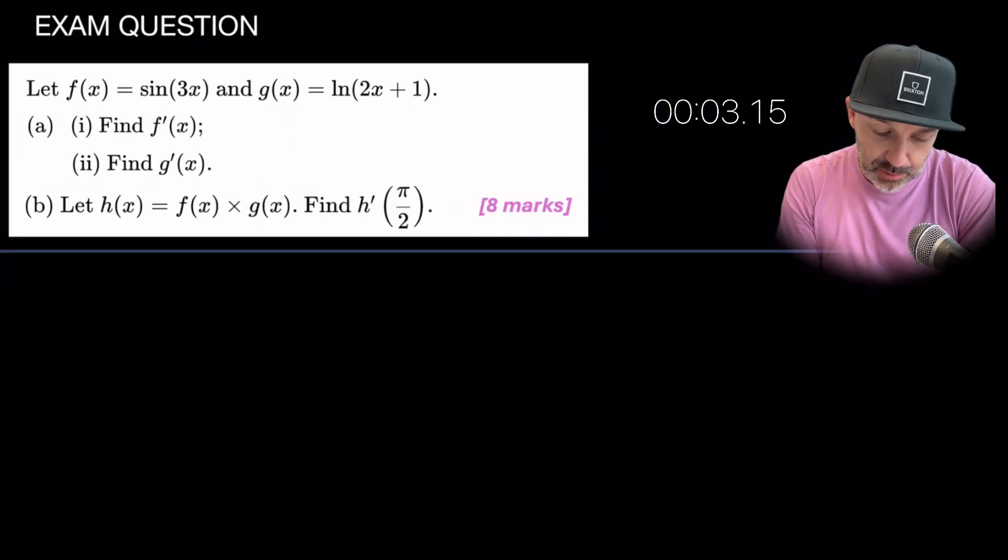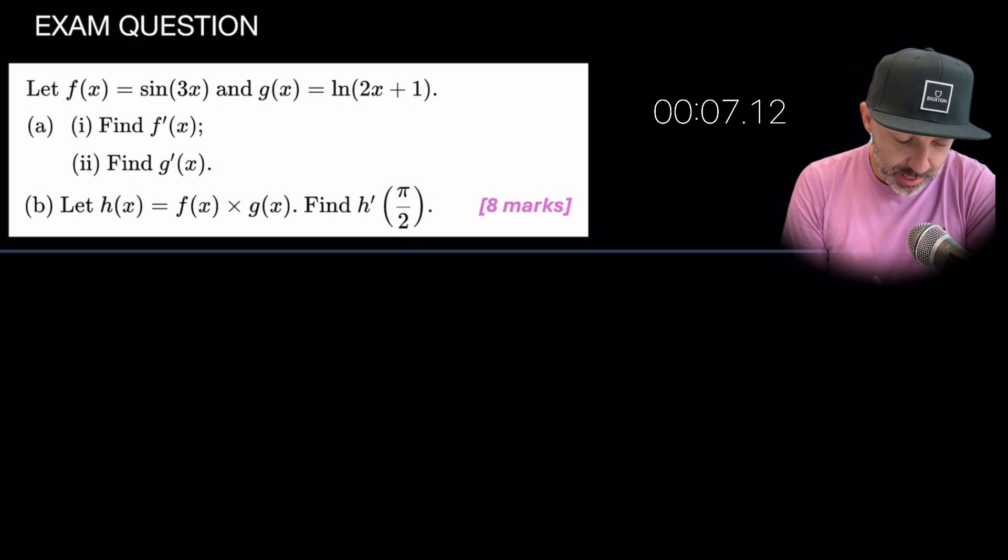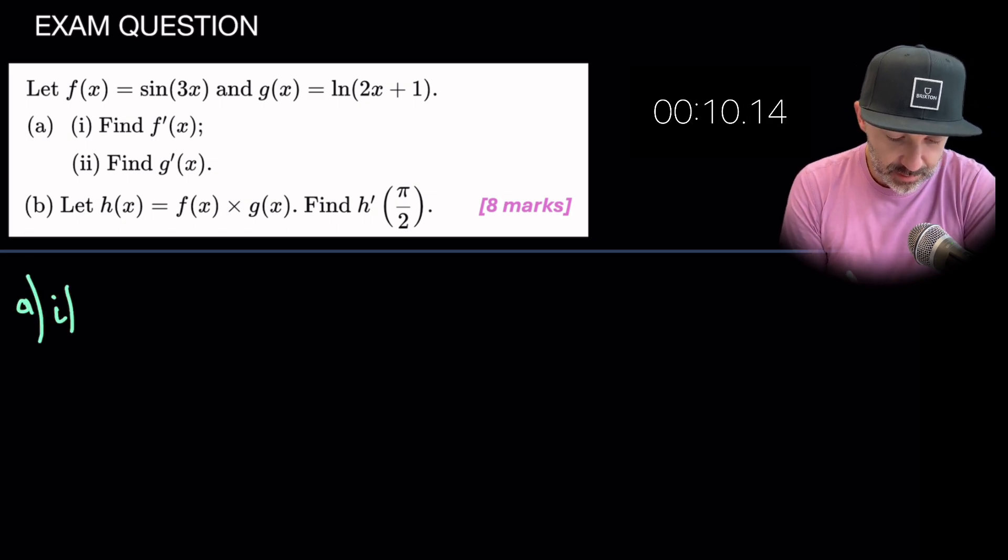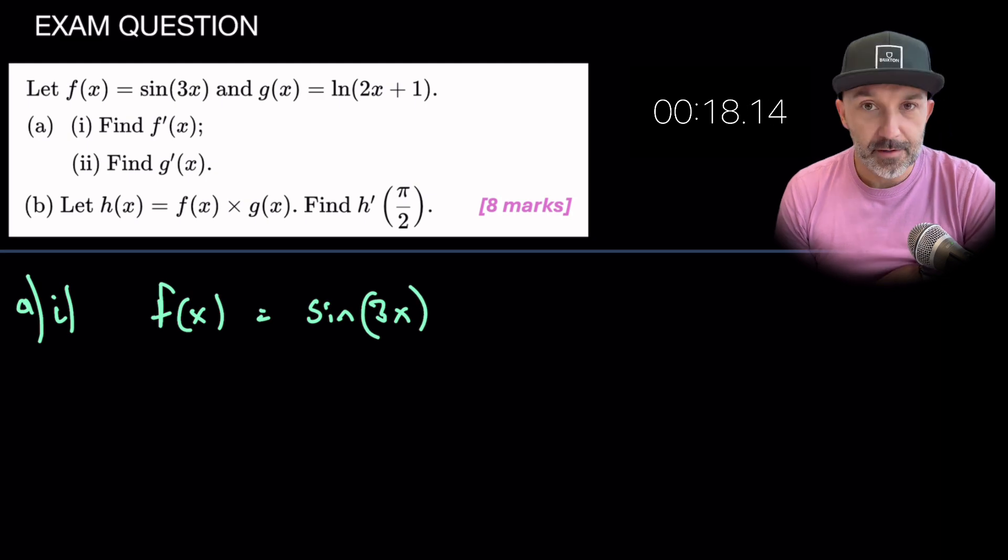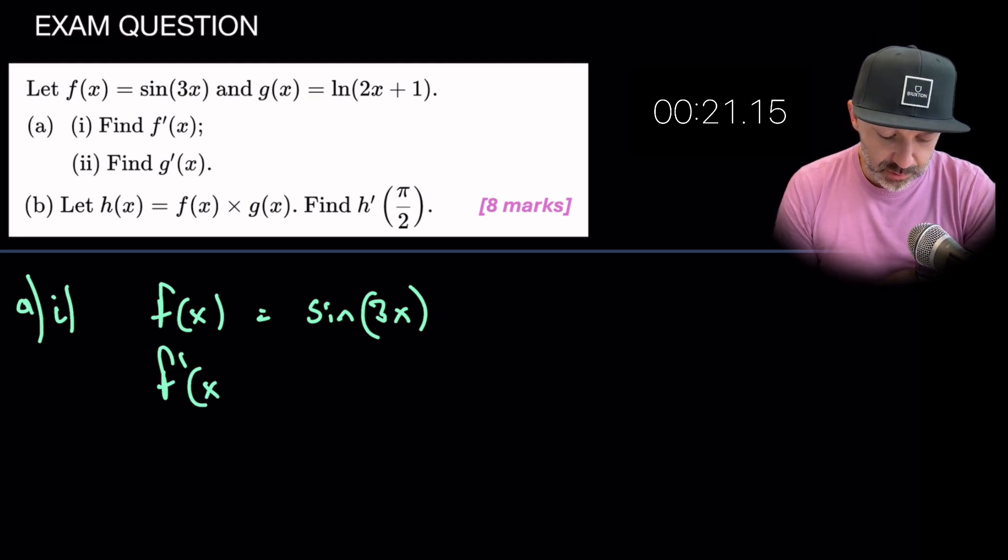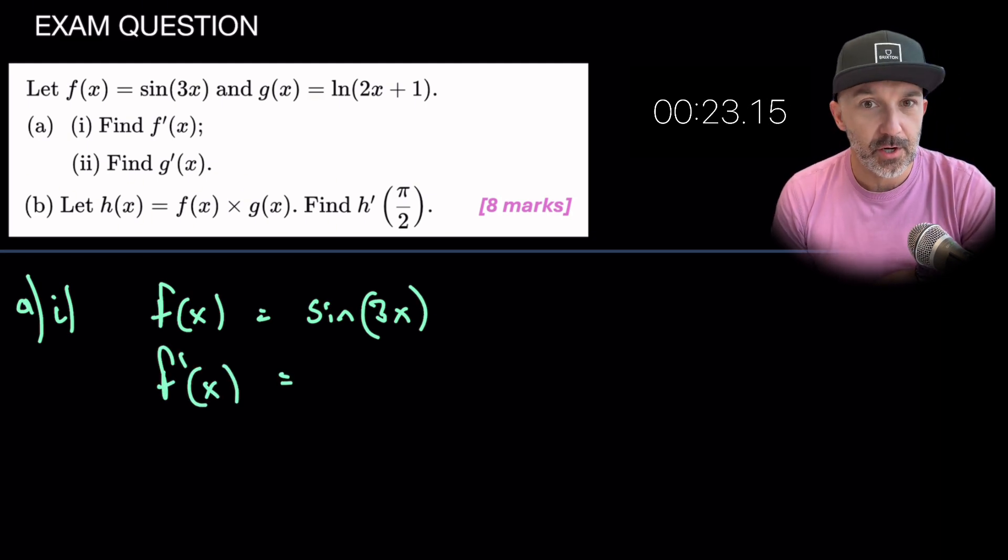Let f of x equals sine 3x. g of x is natural log. Part a is find f prime of x. So if f of x is equal to sine 3x then the derivative of this, well sine turns into cosine.